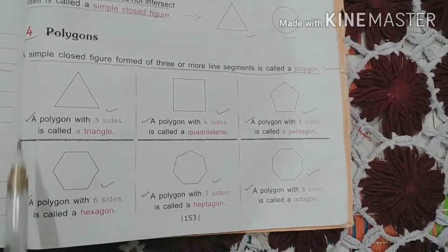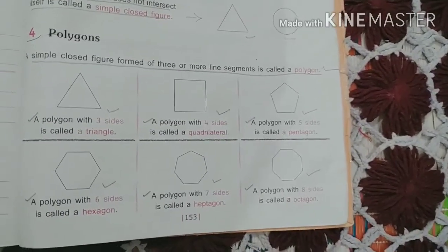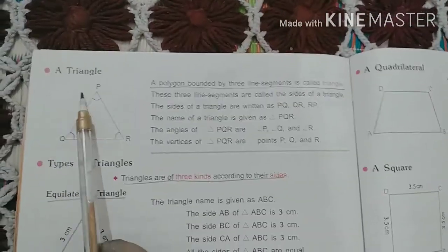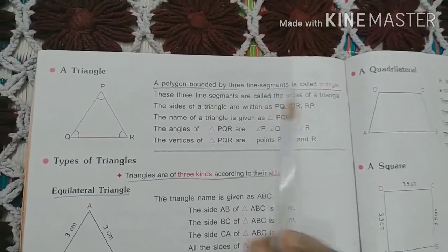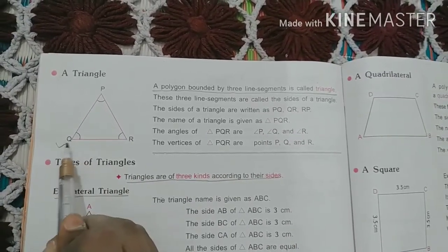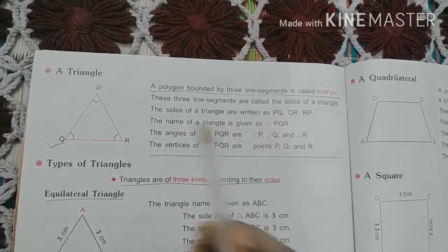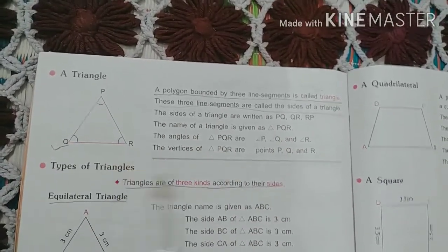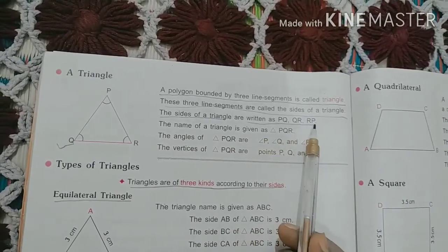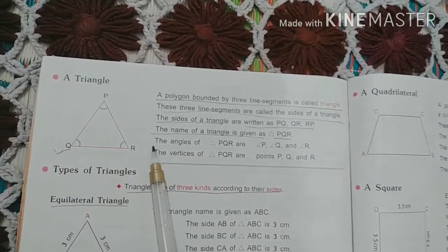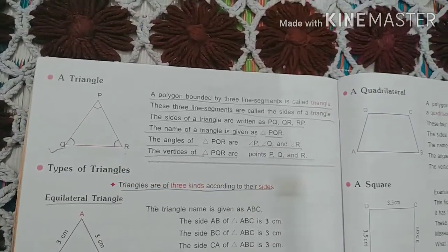Draw all these figures along with their definitions in your notebook. On the next page, page 154, write the heading: Triangle. Definition: a polygon bounded by three line segments is called a triangle. The three line segments are called the sides of the triangle — written as PQ, QR, and RP. The triangle is named triangle PQR. The angles are angle P, angle Q, and angle R. The vertices are points P, Q, and R.